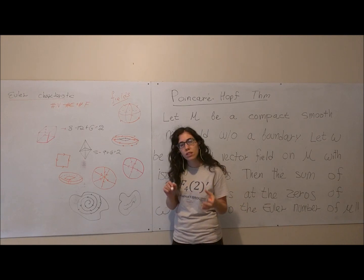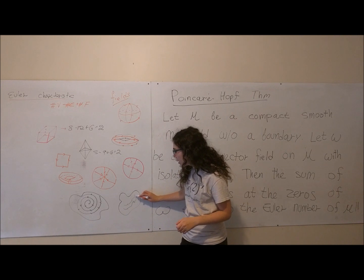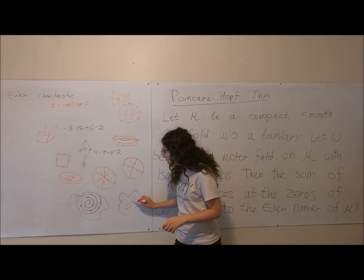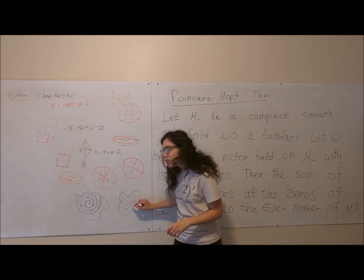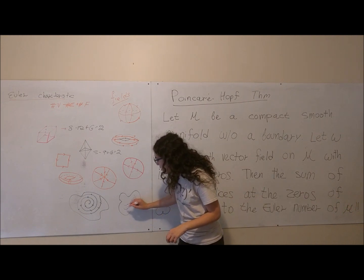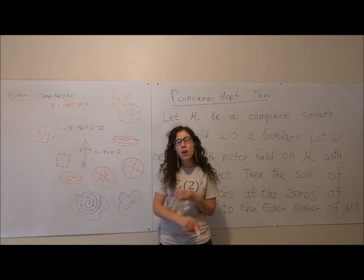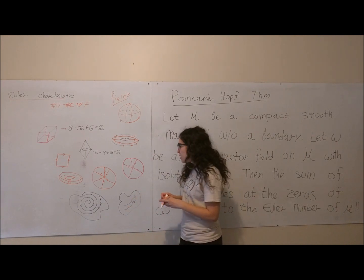You can sort of understand what a vector field is by assuming that you have a particle here on the surface and you're assigning to it a path and a direction and a speed. So if your particle starts here, it will follow this path; it starts here, it will follow this path. There are many ways to assign this path.